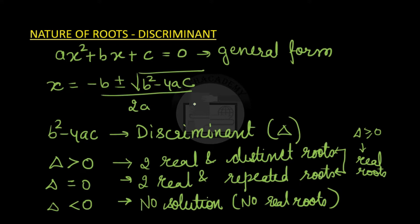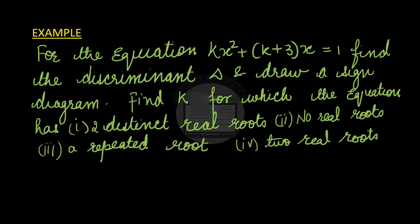Now let us solve an example. The equation given is kx squared plus (k plus 3)x equals 1. We have to find the discriminant of the equation, draw a sign diagram, and find the value of k for which the equation has two distinct real roots, no real roots, a repeated root, and two real roots.